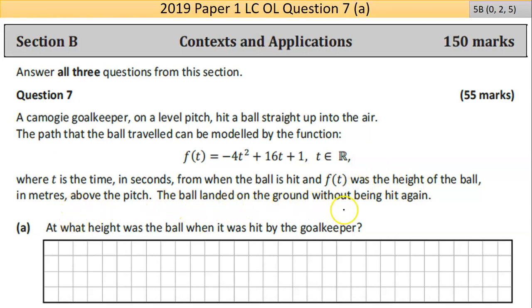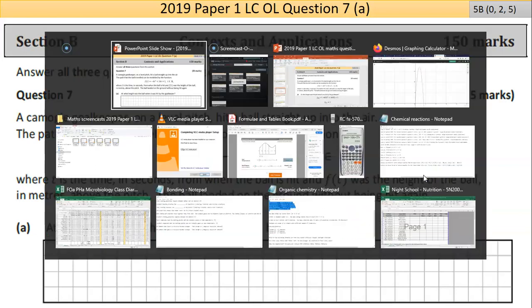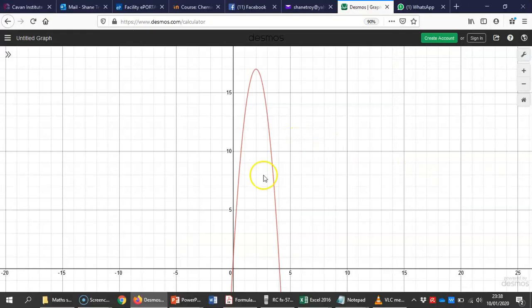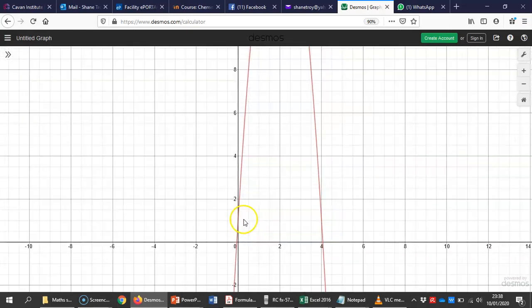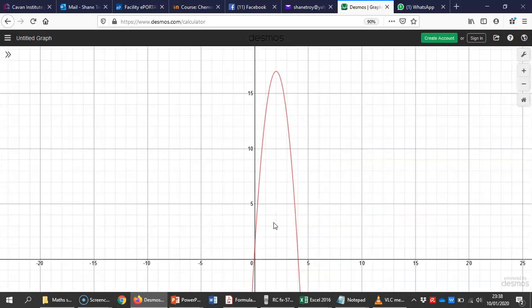The ball landed on the ground without being hit again. The height it was kicked from, goes up, gravity will slow it down, stop mid-air and then come back down to the ground. So this particular quadratic expression is modelling that movement.